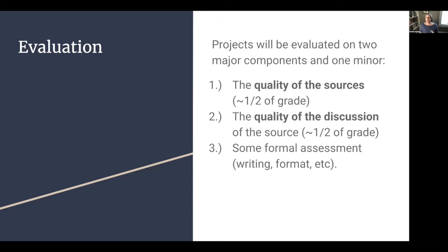How is this going to be evaluated? There are two major components and one minor component. The first major component is the quality of the source — is this a good source? You have to figure that out, and even if your summary and rhetorical context assessment are spot on, if the source itself is not good, that will highly impact the grade. The second thing you'll be evaluated on is the quality of the discussion — your annotation. The third, minor component is formal: is it formatted correctly, have you used citations, are the bibliographic entries correct?